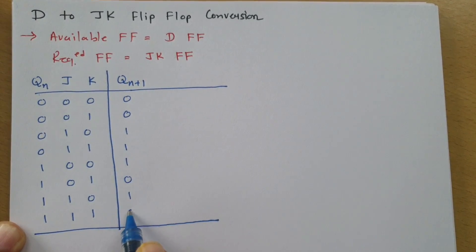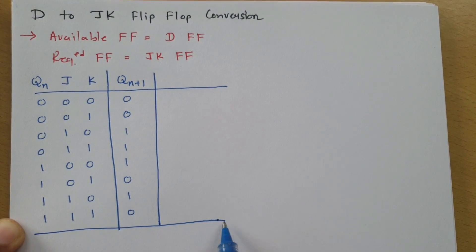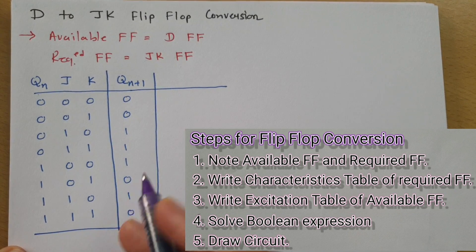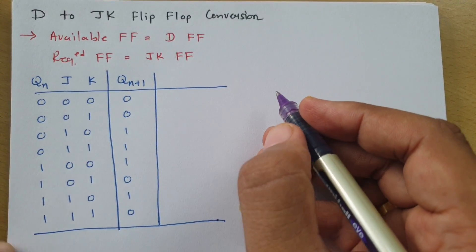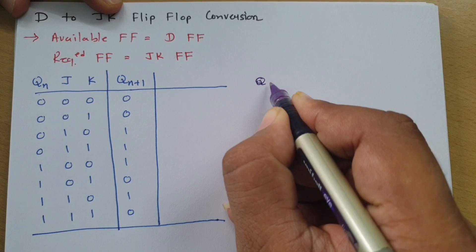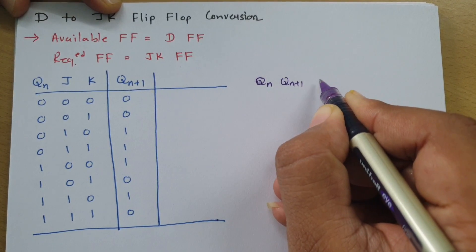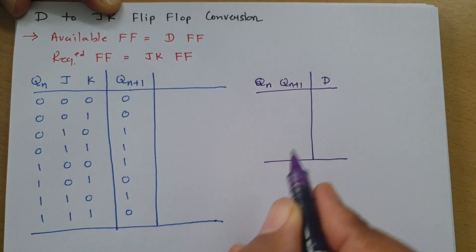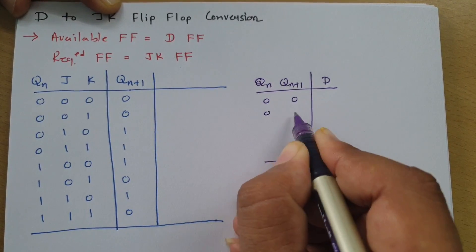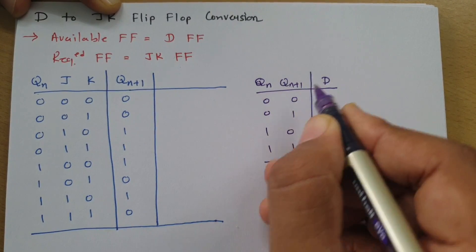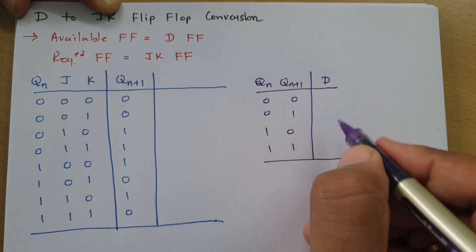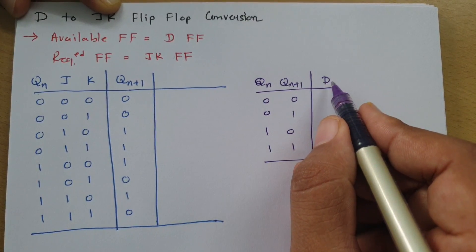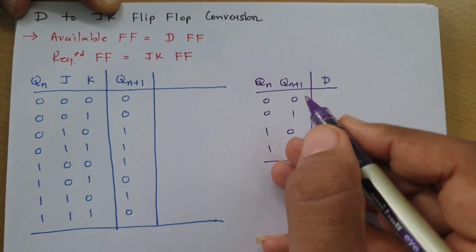The third step is to write the excitation table of the available flip-flop, which is the D flip-flop. The excitation table is a table of Qn and Qn+1 with respect to D — current state and next state with respect to input. There are four possible combinations of Qn and Qn+1. Since for D flip-flop, Qn+1 equals D, both Qn+1 and D are the same.